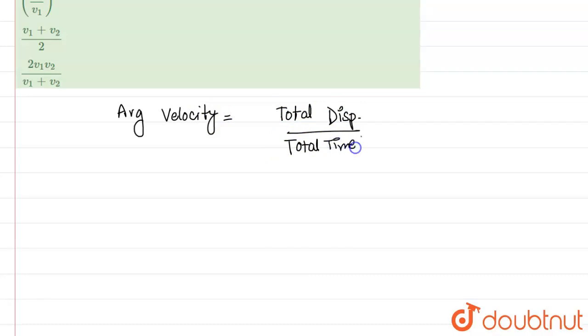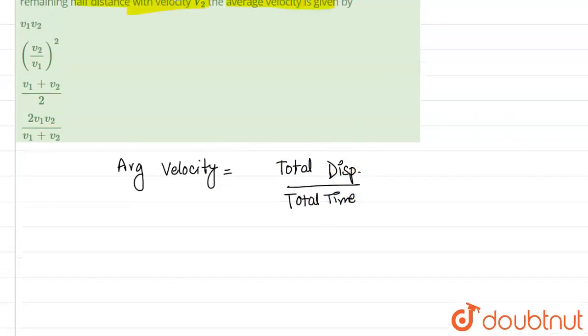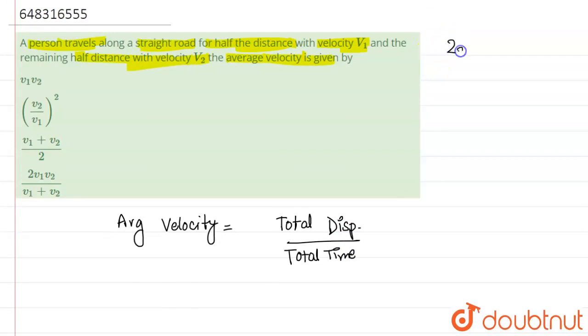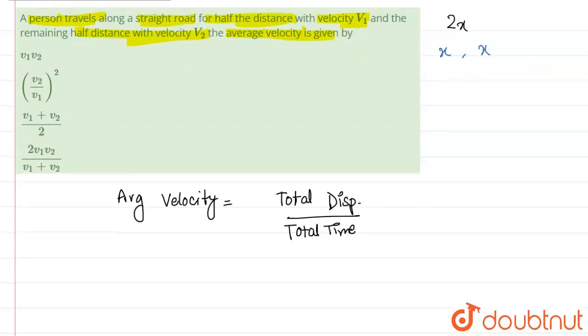So basically we know that total displacement is what? Let's suppose the total distance is 2x. So in the first half it will travel x and the second half it will travel again x.